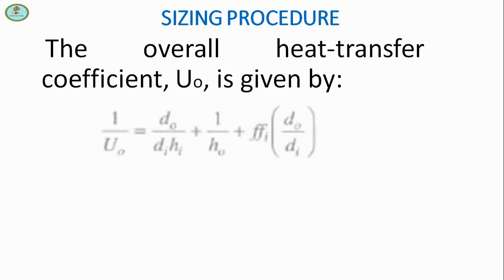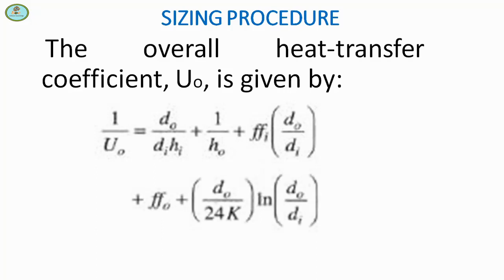The overall heat transfer coefficient U₀ is given by 1/U₀ = (D₀/Dᵢ) × (1/Hᵢ) + 1/H₀ + FFᵢ × (D₀/Dᵢ) + FF₀ + (D₀/Dᵢ) × (D₀ ln(D₀/Dᵢ))/K. This is equation 4.